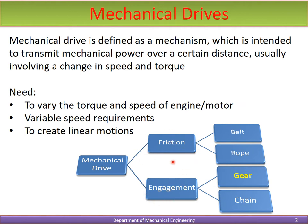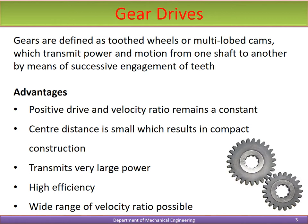Friction drives utilize frictional force to transmit power; belt and rope drives transmit power using frictional force. The other classification is positive engagement, where gear and chain systems are classified under positive engagement systems — one gear engages with another gear, or chain sprockets engage with chains. In Module 3, we will be focusing on gear drive systems.